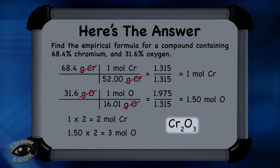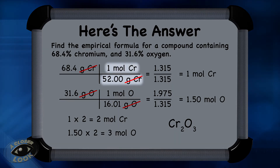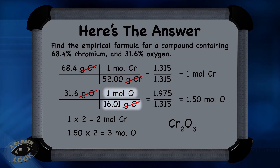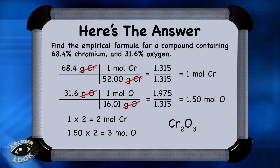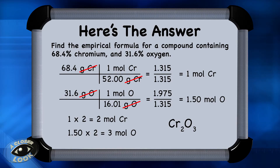If your final answer was Cr₂O₃, that is correct. Let's walk through how you got there. We took the percentages and converted to grams: 68.4% chromium becomes 68.4 grams of chromium. Using the molar mass from the periodic table, we found 1.315 moles of chromium. Then we did the same for oxygen — converting 31.6 grams of oxygen using the molar mass to get 1.975 moles of oxygen. In the second part, we divided each molar amount by the smallest molar amount, which was 1.315.